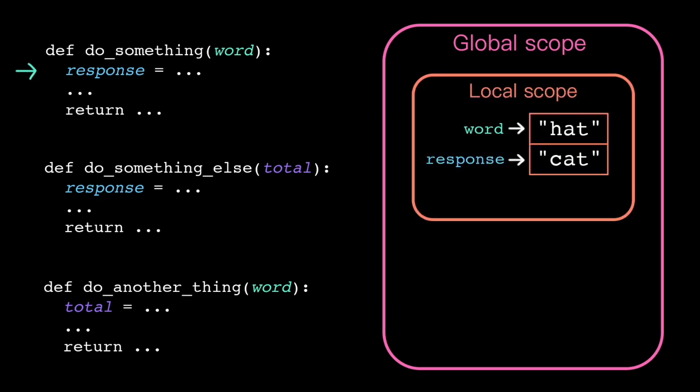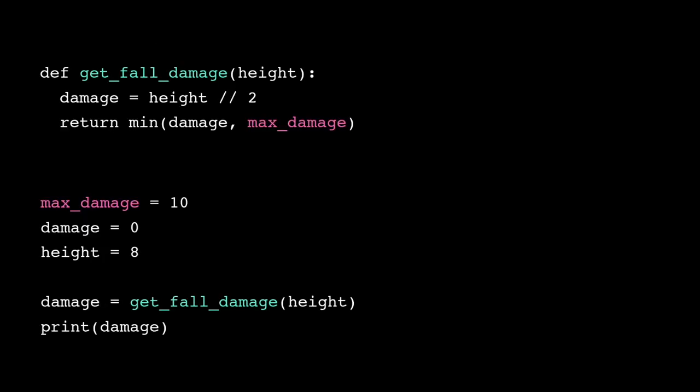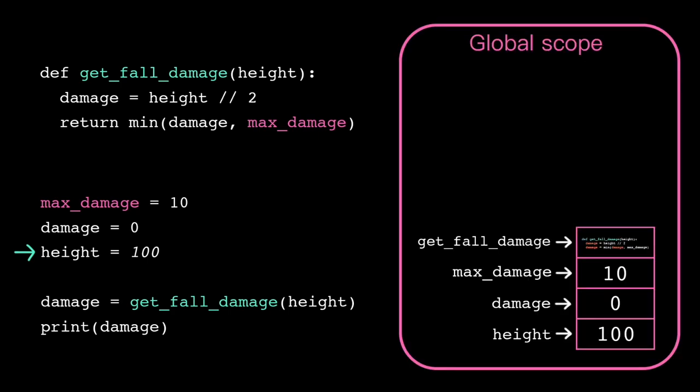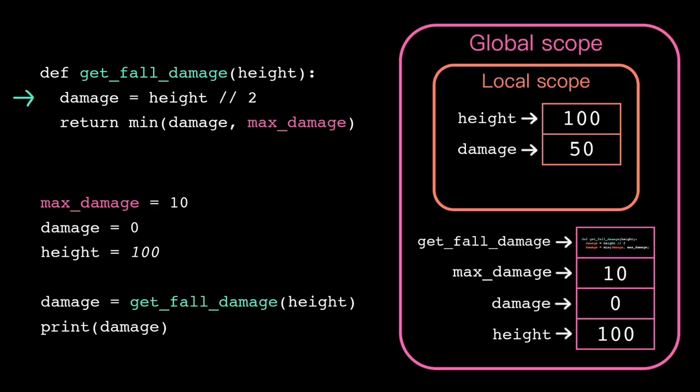Local scope lets us avoid this problem because we don't need to worry about the larger program state. We can reuse whatever names we want inside our local function scope. Let's say I change the value of height to 100. We still have the same four names in global scope and the same two names in local scope.